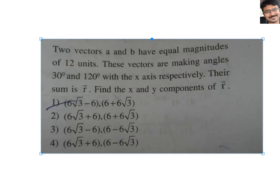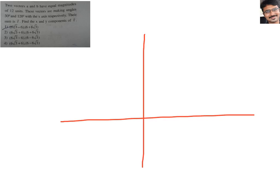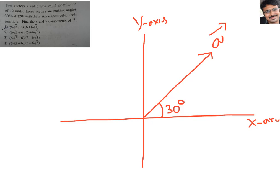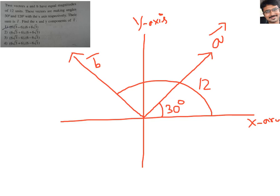I hope you are clear with this question. Let us draw the diagram. We will take one coordinate system. Vector A bar is making an angle of 30 degrees with the x-axis. And one more vector B bar is making 120 degrees with the x-axis. This total angle from the x-axis to B bar is 120 degrees.